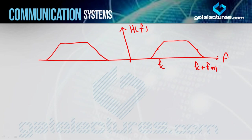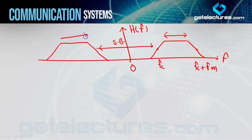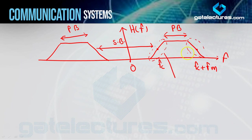Toh is filter mein aap dekhiye dhyan se - yeh portion aapka kahlata hai stop band. Means 0 se lekar yeh portion - stop band positive side mein, aur 0 se lekar yeh portion - stop band in negative side. Jo yeh portion hai, this portion is called pass band - positive side B aur negative side B. Now jo yeh portion hai, jahan se aapka transition ho raha hai from 0 to 1 aur 1 to 0 - this transition portion is called transition band. Toh positive side bhi same hoga aur negative side bhi same hoga - transition band.